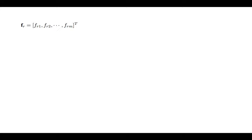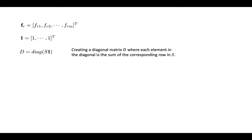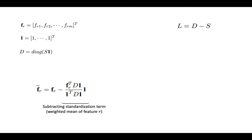A vector is created for all features, and carries its values. Creating a diagonal matrix D, where each element in the diagonal is the sum of the corresponding row in S, and then calculate L, the graph Laplacian, based on D and S. By subtracting standardization term from FR, we calculate FR tilde, then the Laplacian score based on FR tilde.